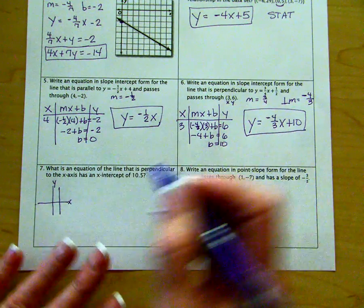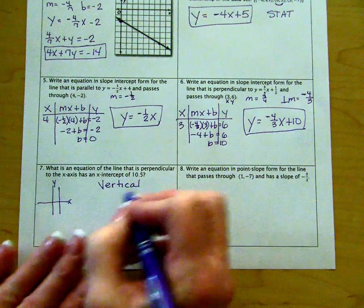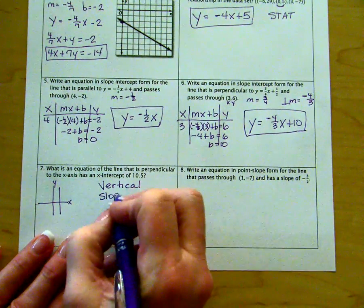To be perpendicular to the x-axis, that means you are parallel to the y-axis, which means you are a vertical line. So I need a vertical line. My slope then would be undefined.